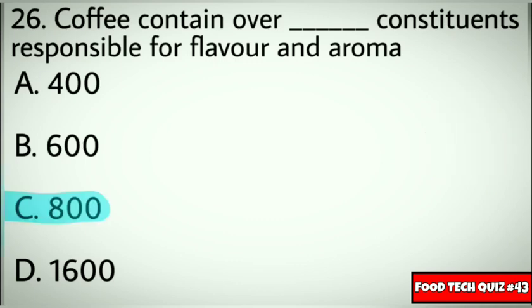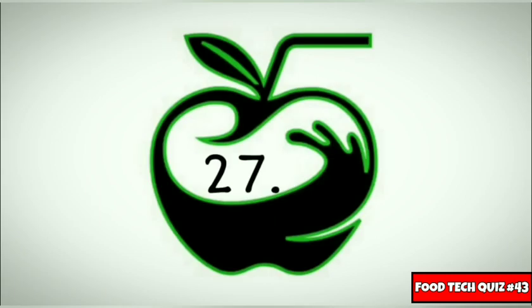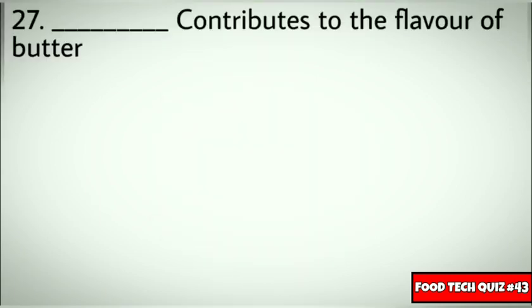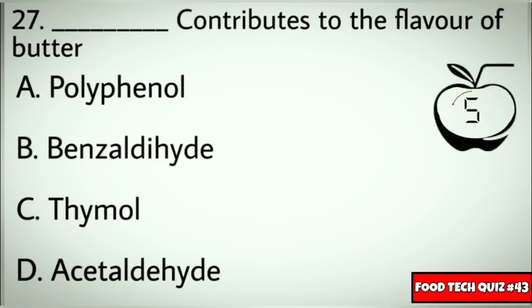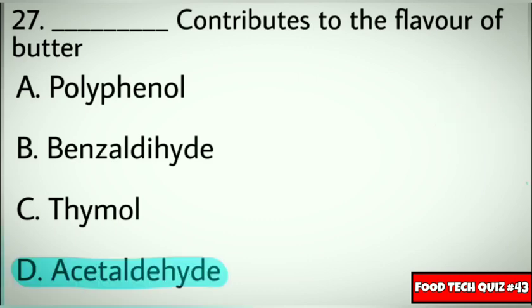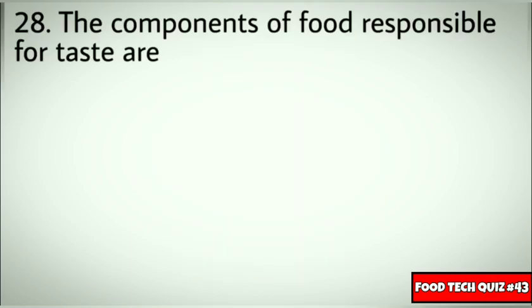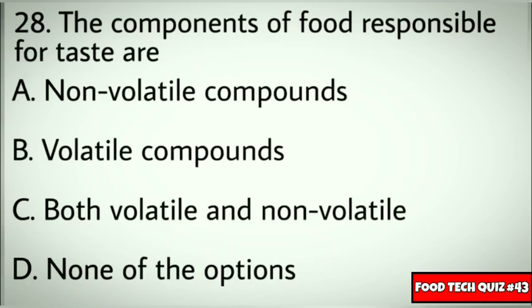Question number 27: Dash contributes to the flavor of butter. Options: A) Polyphenol, B) Benzaldehyde, C) Thymol, D) Acetaldehyde. Correct answer: D) Acetaldehyde. Question number 28: The components of food responsible for taste are? Options: A) Non-volatile compounds, B) Volatile compounds, C) Both volatile and non-volatile, D) None of the options. Correct answer: A) Non-volatile compounds.